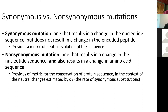On the flip side, non-synonymous mutations are mutations where a substitution in the nucleotide sequence results in a change of amino acid. Non-synonymous mutations essentially provide a metric of the conservation of protein sequence in the context of neutral changes, which is estimated by the synonymous mutations. The more conserved the protein is, the more resistant it will be to changes in amino acid sequence, so the rate of non-synonymous mutations should be low — relative to the rate of synonymous mutations, because all proteins evolve at different rates.